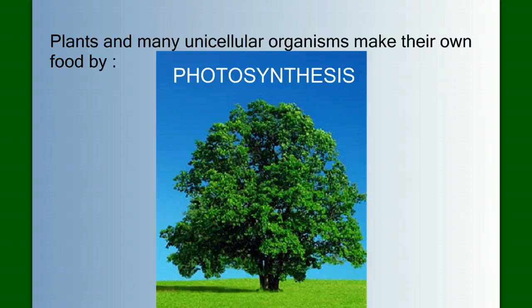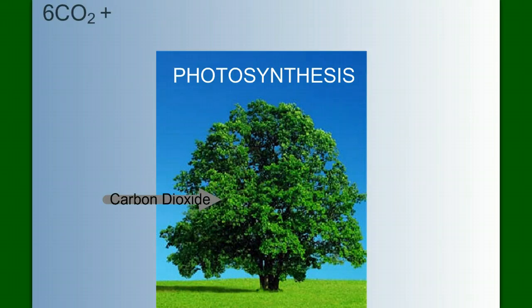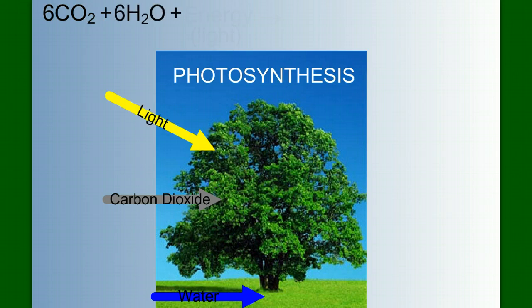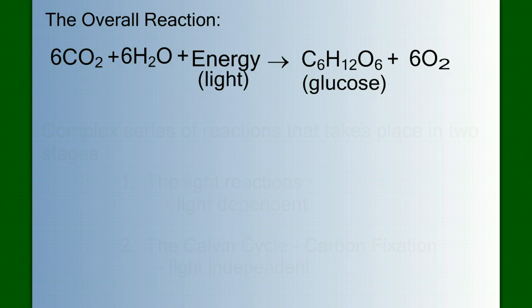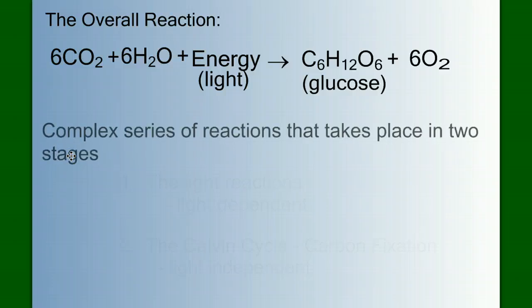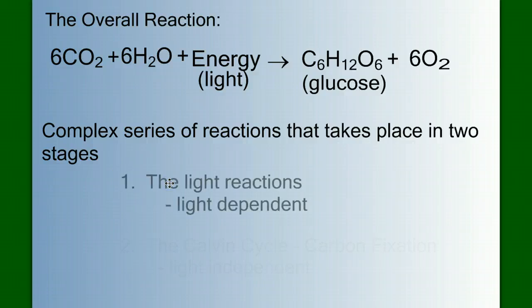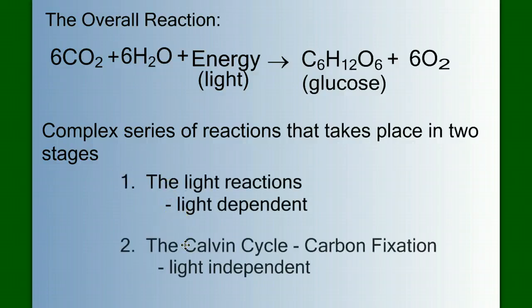So what do we know about how plants and other photosynthetic organisms make their food? What do plants need? We know that plants take in carbon dioxide, water, and energy in the form of light. They use these ingredients to produce sugars, and in doing so, they liberate oxygen. Here's our overall chemical reaction for photosynthesis. But like we learned in our Introduction to Metabolism video, overall reactions don't tell the whole story. Photosynthesis is a complex series of reactions that take place in two stages: the light-dependent reactions and the Calvin cycle, or carbon fixation.